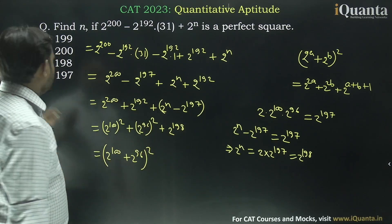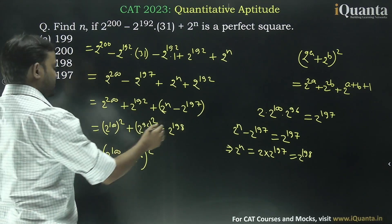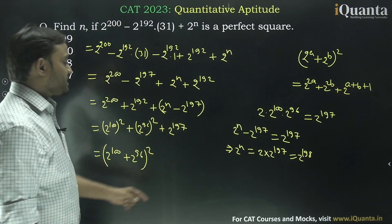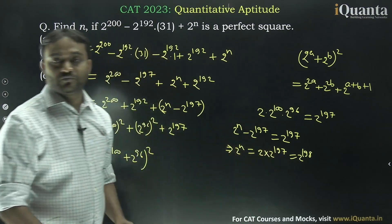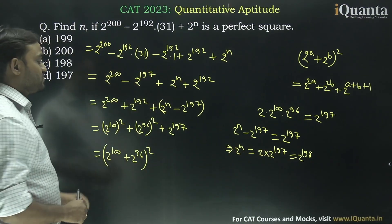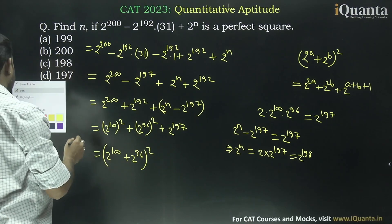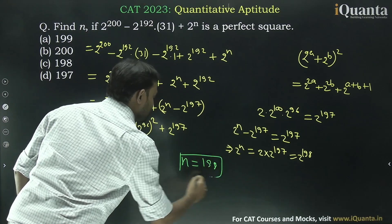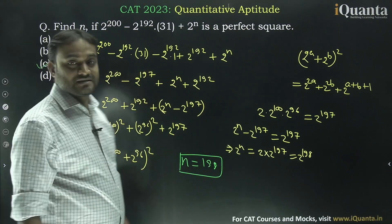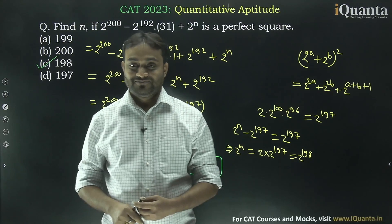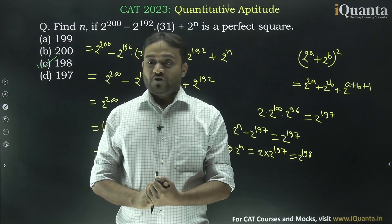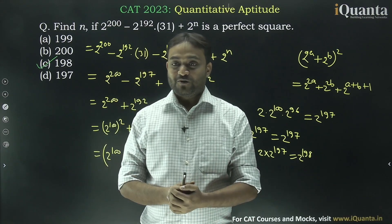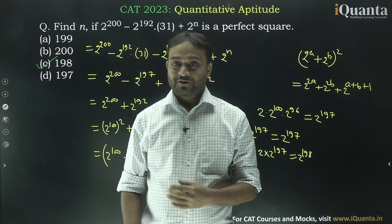As you can see, this is 2 to the power 197, not 198. So what we can say is that 2 to the power n is 2 to the power 198, which means n is equal to 198. To make this expression a perfect square, n = 198, hence C is the correct answer. I hope you understand this. If you have any doubt, you can put it in the comments. Thank you, bye bye.